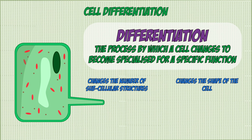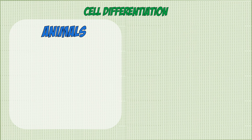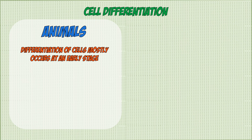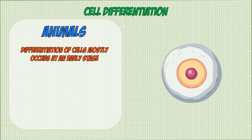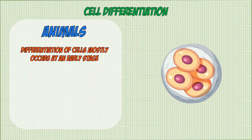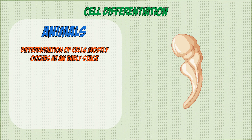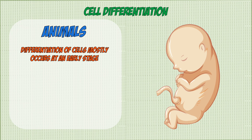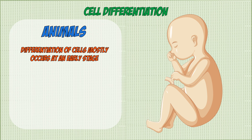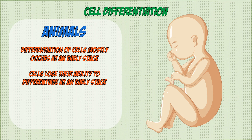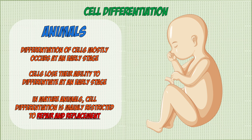In most animal cells, differentiation really only happens at an early stage in their lives, when the organism is very young. Most cells become specialized by the time the animal is an infant, and once they become specialized, they lose the ability to differentiate — so they won't be able to do it again.